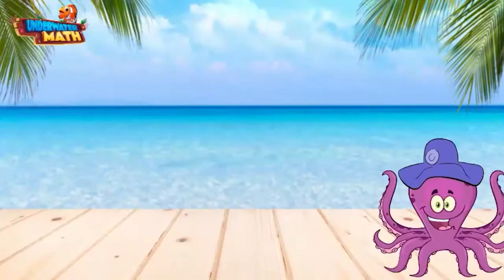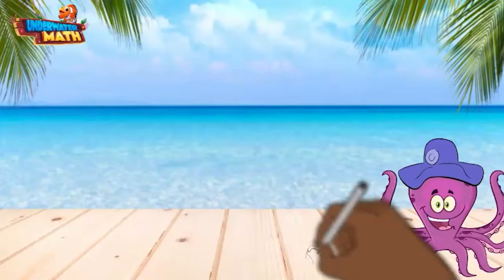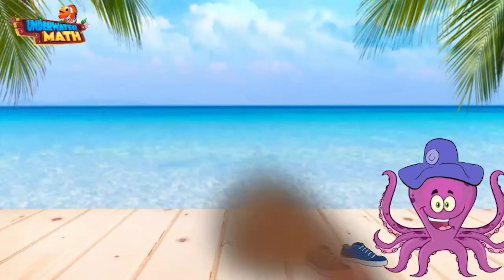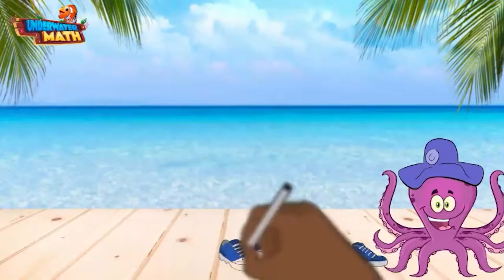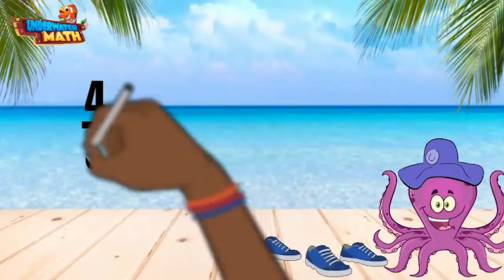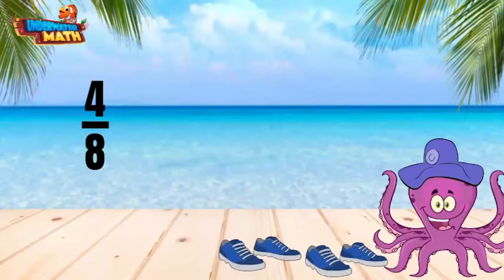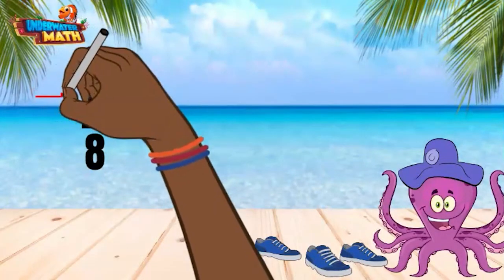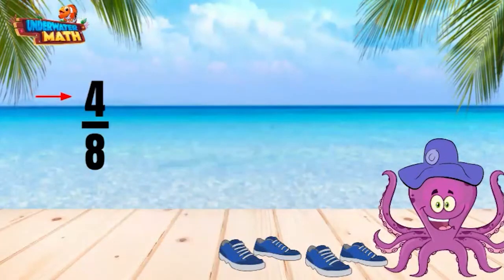As an octopus, I have to buy a lot of shoes. I have 8 tentacles but only 4 shoes. This can be represented as 4 eighths, which can be broken down into a sum of unit fractions. First, we consider how many eighths we have — 4. This is how many 1-eighths we add together to make our fraction.